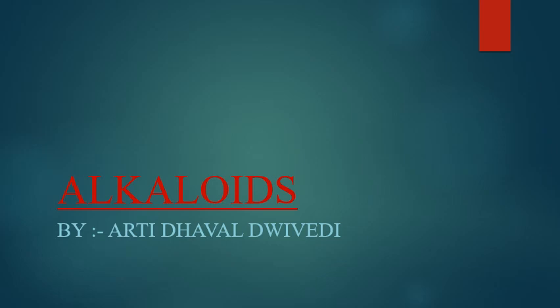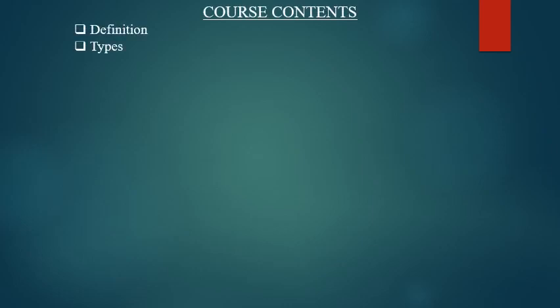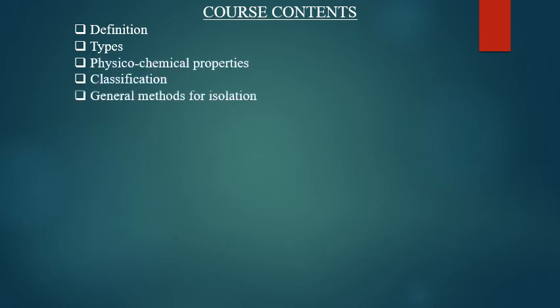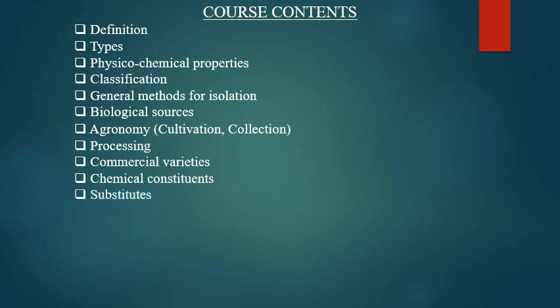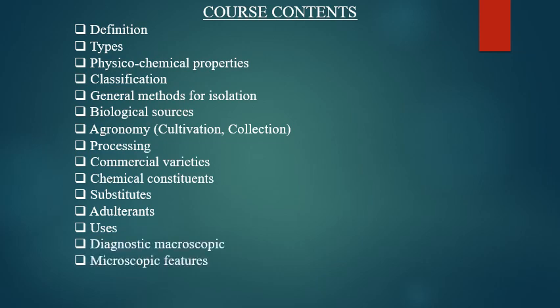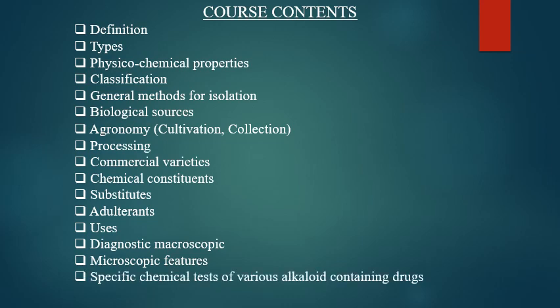I will give you the basic knowledge of Alkaloids, including Definition, Types, Physicochemical Properties, Classification, General Methods for Isolation, Biological Sources, Agronomy, Processing, Commercial Varieties, Chemical Constituents, Substitutes, Adult Trends, Uses, Diagnostic Macroscopic and Microscopic Features, and Specific Chemical Tests of Various Alkaloid Containing Drugs.